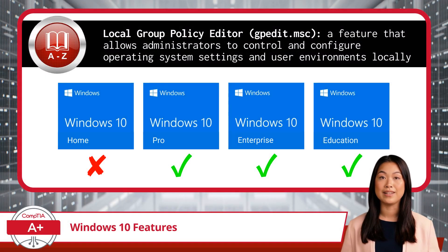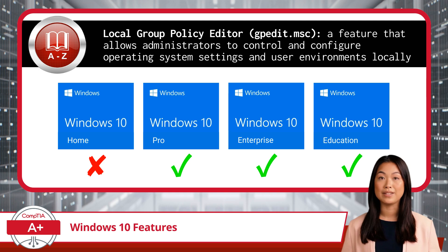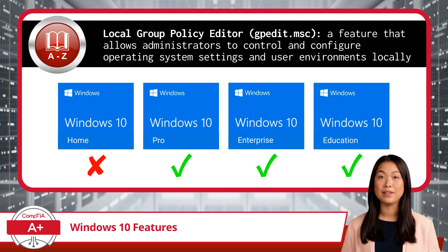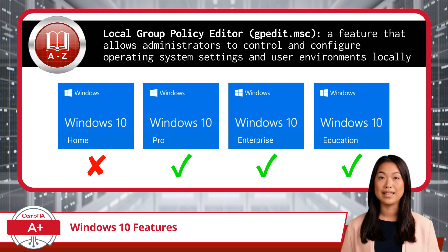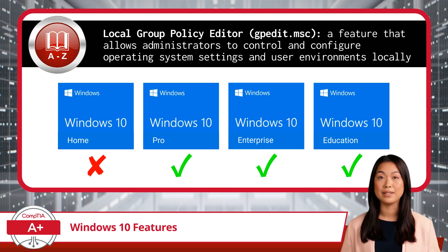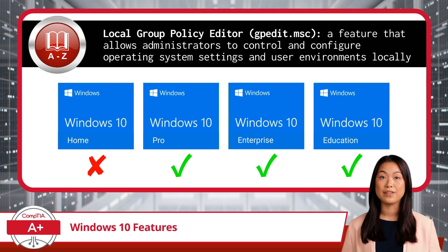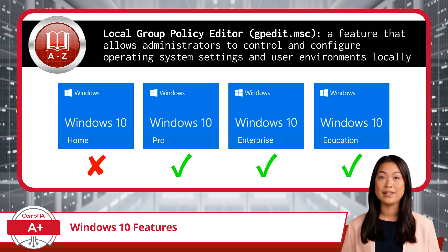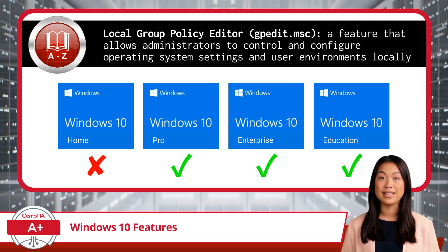The Local Group Policy Editor is a feature that allows administrators to control and configure operating system settings and user environments locally on a single device — or better yet, think of it as a control panel for settings on your computer. Imagine you are a parent setting rules for your kids on what they can or cannot do at home. Similarly, the Local Group Policy Editor lets an administrator set rules on what users can or cannot do on the local computer. For example, it can be used to prevent users from changing the desktop wallpaper or require them to use strong passwords. It's a tool that gives administrators control over computer settings.